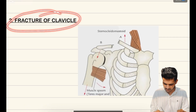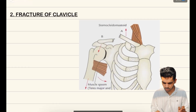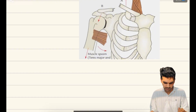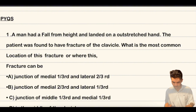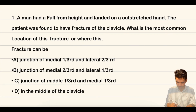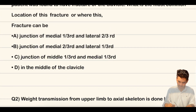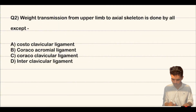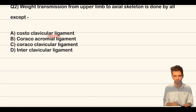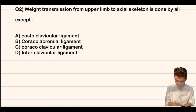Now, fracture of the clavicle. The most common fracture site of the clavicle is at the junction of the medial three-fifths and lateral two-fifths, as per Gray's Anatomy latest edition. Previously it was given that the most common fracture is at the medial two-thirds and lateral one-third — take note of this. Question 1 from SFFMG June 2022: A man had fallen from height and landed on an outstretched hand and was found to have a fracture of the clavicle. The correct answer is option B — junction of medial two-thirds and lateral one-third — as this question was based on the old edition. Question 2 on weight transmission from upper limb to axial skeleton: the answer is option B — the coracoclavicular ligament — with the costoacromial ligament being the exception.